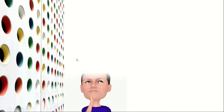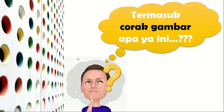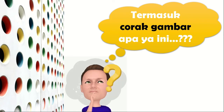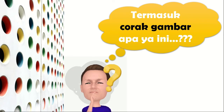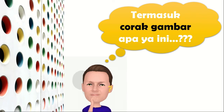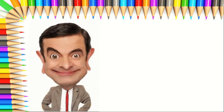Oke kita akan main game bersama-sama! Ustazah punya beberapa gambar, kalian tinggal menjawab termasuk corak gambar apa. Yang pertama, ada gambar Mr. Bean — tapi kayaknya gambarnya tidak seperti aslinya ya. Oke, termasuk gambar apakah Mr. Bean di sini?